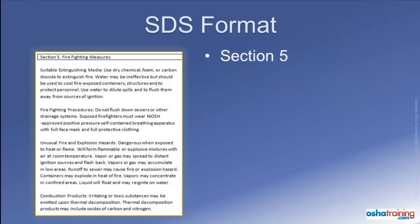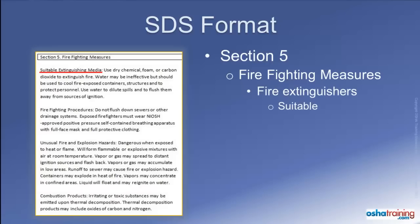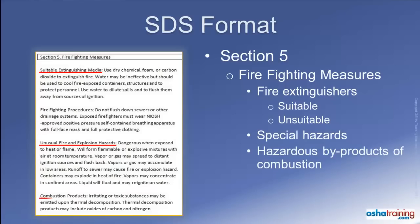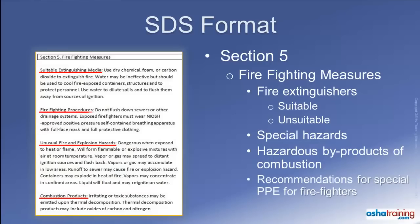Section 5 provides the manufacturer's recommendations for fighting a fire that involves their product. Here, you will find a recommendation for the most suitable type of equipment for extinguishing a fire involving the product, as well as information about extinguishers that are not appropriate for use. You will also find details about specific hazards that may develop when the product is involved in a fire, as well as hazardous byproducts that may be generated during combustion, and in some cases recommendations for special protective equipment for fire brigades or firefighters.